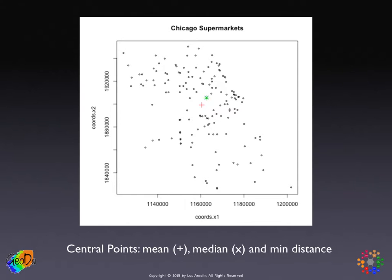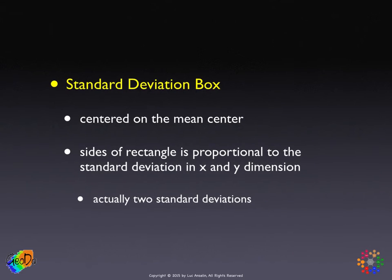These measures of central tendency are rather limited — they give a quick overview of where the core of the activity is. In criminology, for example, one could track the movement of drug arrests over time from month to month, or assess whether the center of activity stays in the same place or moves as a result of police intervention. The more interesting description comes when you combine central tendency with the standard deviation as a measure of spread.